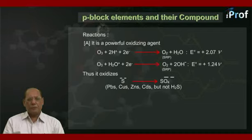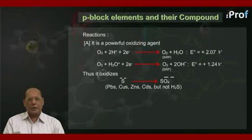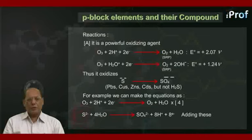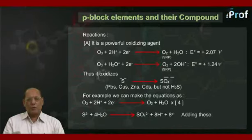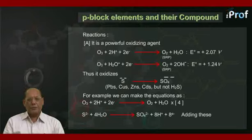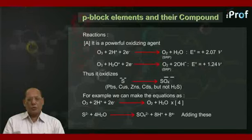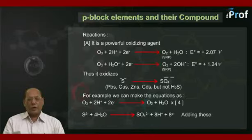Ozone oxidizes sulfide ion into sulfate ion — for example, sulfide ion in PbS, CuS, ZnS, or CdS, but not in H2S. Combining the half-equations: O3 + 2H⁺ + 2e⁻ gives O2 + H2O (multiplied by 4), and S²⁻ + 4H2O gives SO4²⁻ + 8H⁺ + 8e⁻; adding these gives the overall oxidation.